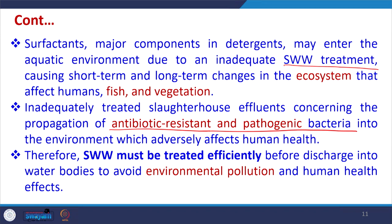Surfactants — major components in detergents — may also enter the aquatic environment due to inadequate treatment, causing short-term and long-term changes in ecosystems affecting humans, fish, and vegetation. Inadequately treated slaughterhouse effluent poses serious concerns about the propagation of antibiotic resistance and pathogenic bacteria into the environment. Slaughterhouse wastewater must be treated efficiently before discharge. Ideally it should be recycled, but challenges exist; treated water can mainly be used for gardening.